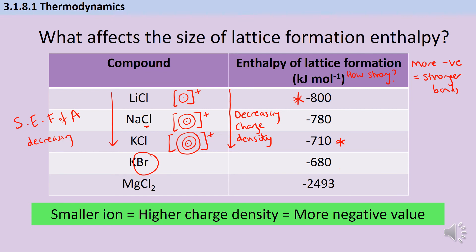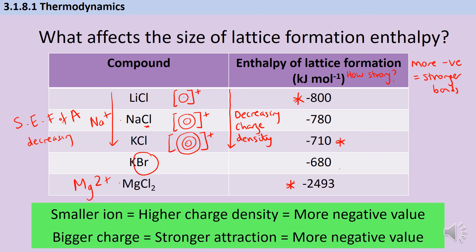The second factor: if we look at magnesium chloride and compare it to sodium chloride, magnesium chloride has a much more exothermic enthalpy of lattice formation. The reason is that while these two cations are about the same size, magnesium is a 2+ ion whereas sodium is only a 1+ ion. Because we have a more charged particle, there's going to be a stronger electrostatic force of attraction between the magnesium and the chloride ion, and therefore we're going to have a more exothermic value.